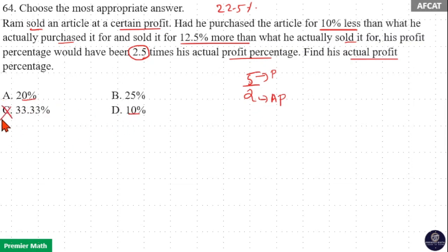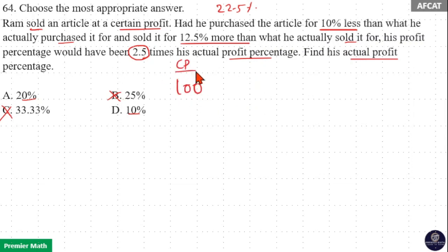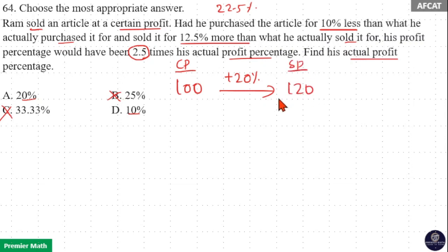Options C and B are eliminated since they are not multiples of two. Now going directly for option verification: if cost price is 100 rupees and profit is 20 percent, then 100 plus 20 is 120, meaning sell price is equal to 120. The question says if Ram purchased the article for 10 percent less than the actual cost — here actual cost is 100 rupees.